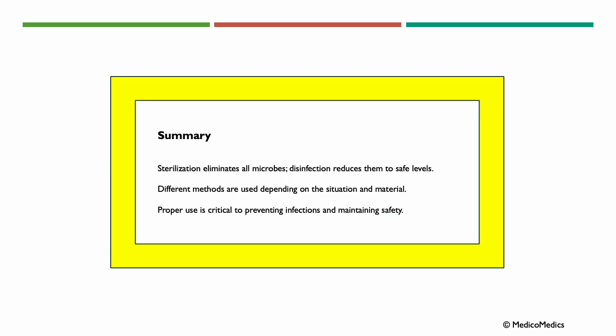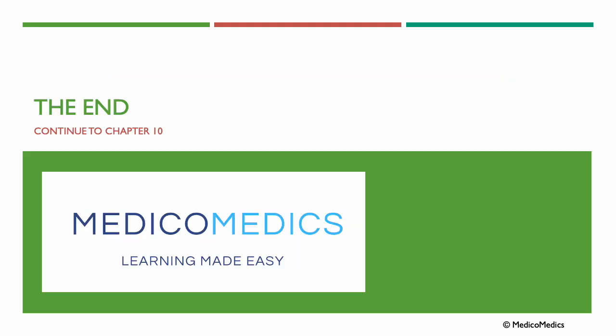In summary: sterilization eliminates all microbes; disinfection reduces them to safe levels. Different methods are used depending on the situation and the material. Proper use is critical to preventing infections and maintaining safety. That's the end of this lecture — continue now to Chapter 10.